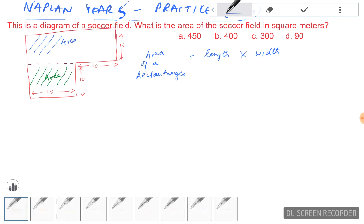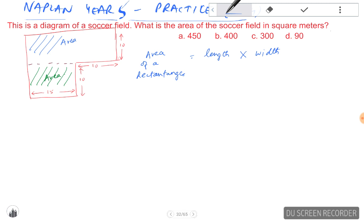So the area of the rectangle on the top - we need to find the length, which is 15 plus 10, that is 25. So the area of the top rectangle would be the length, which is 25, multiplied by 10, which is the width: 250.